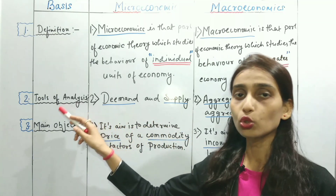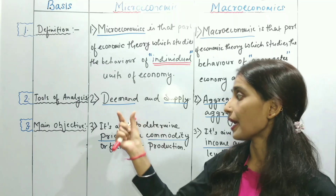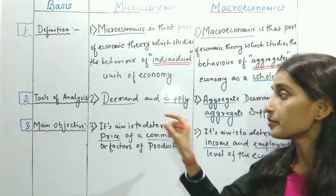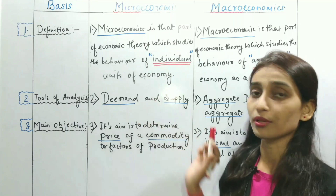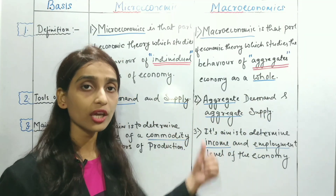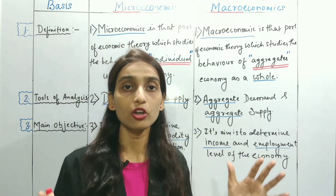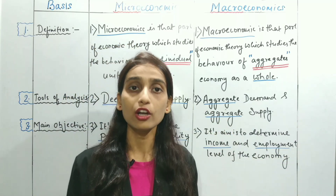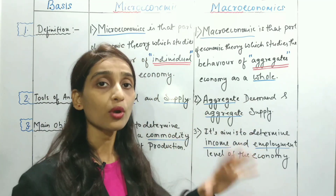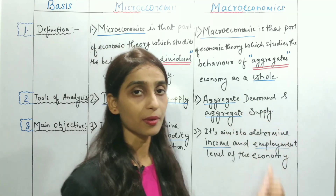The second difference is on the basis of tools of analysis. In microeconomics, the main tool of analysis is demand and supply. In macroeconomics, the tools are aggregate demand and aggregate supply, because macroeconomics deals with the economy at a large level — the whole economy — considering what happens with aggregate demand and aggregate supply.